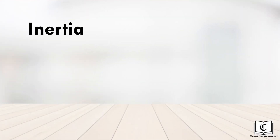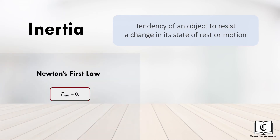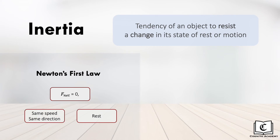Now that we have covered Newton's first and second laws, let's briefly touch on the concept of inertia, which is the tendency of an object to resist a change in its state of rest or motion. This ties in closely with Newton's first law — without a resultant force acting on the object, the object will never change its state of rest or motion, which is essentially inertia.